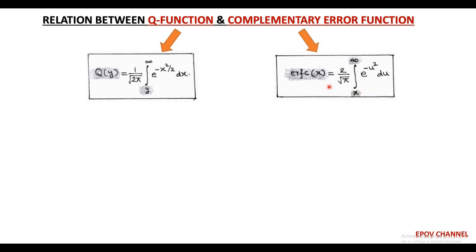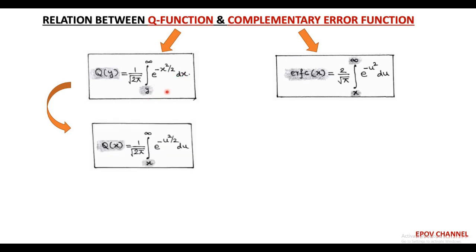For convenience and comparison purposes, we can also write the Q-function with limits the same as the complementary error function. We take another real variable u and integrate with respect to du, giving Q(x) = 1 upon √(2π) times the integral of e^(−u²/2) du from u = x to infinity. After making these changes, the Q-function and complementary error function are quite comparable.